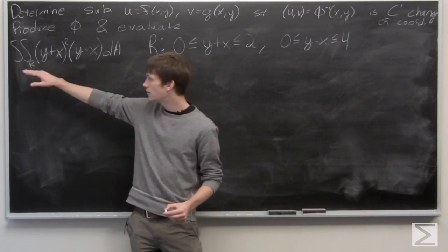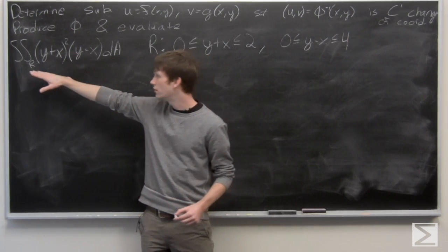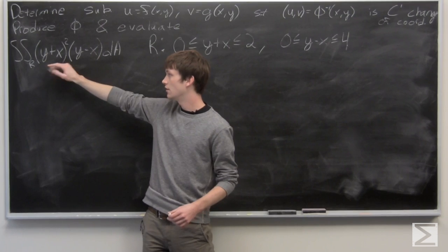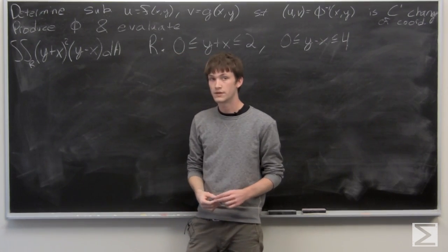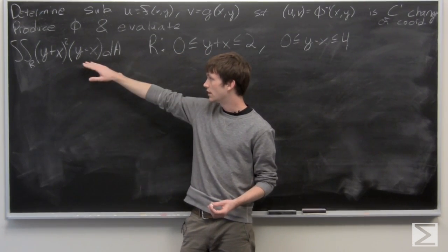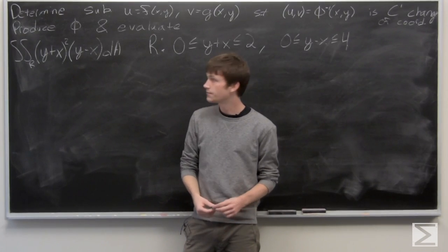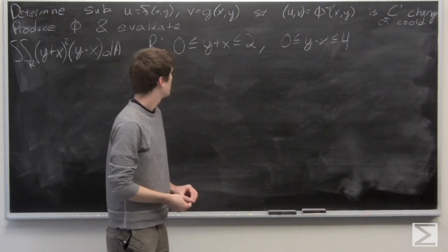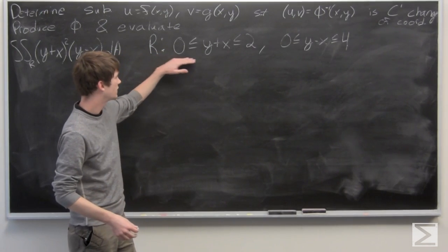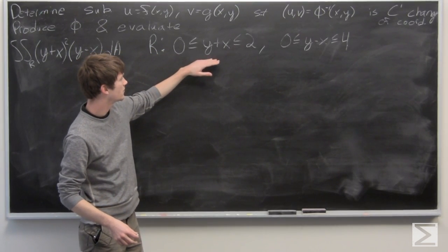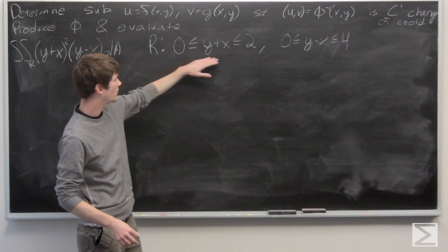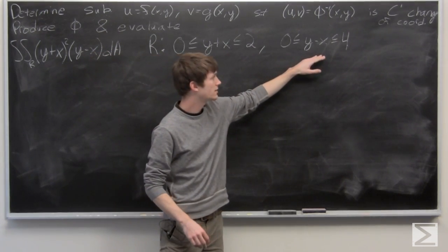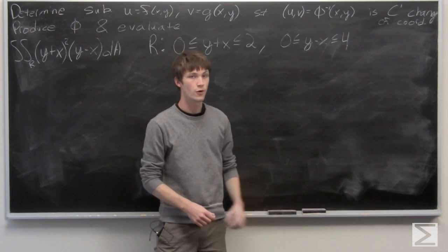We're given the double integral over our region R, where the integrand is the quantity (y + x) squared times the quantity (y - x), times dA. And R is defined as the region where y + x is between 0 and 2, and y - x is between 0 and 4.